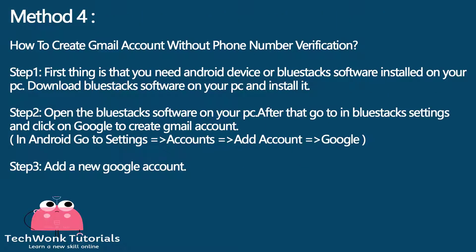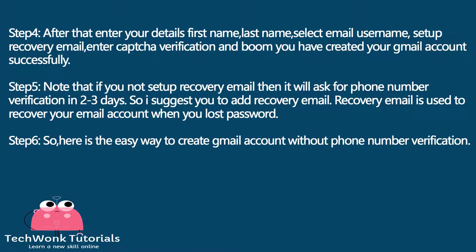Method 4. How to create a Gmail account without phone number verification. Step 1: You need an Android device or BlueStacks software installed on your PC. Download and install BlueStacks software on your PC. Step 2: Open BlueStacks, go to settings and click on Google to create a Gmail account. On Android, go to Settings, then Accounts, then Add Account, then Google. Step 3: Add a new Google account. Step 4: Enter your details — first name, last name, select email username, set up recovery email, enter the CAPTCHA verification — and your Gmail account has been created successfully.